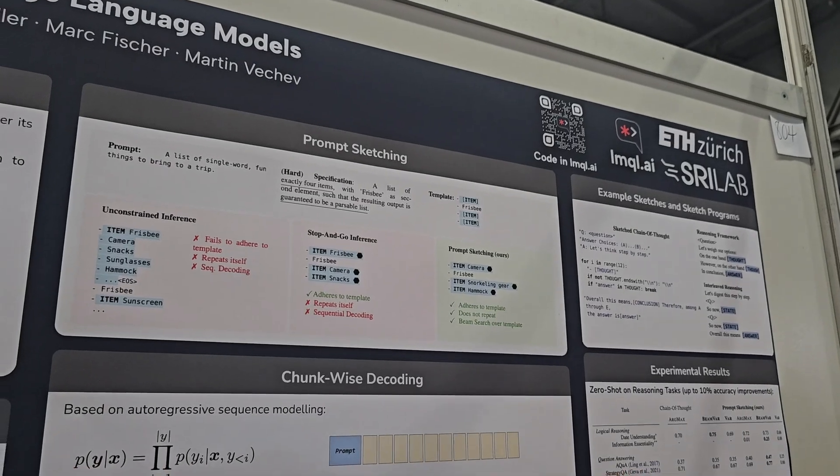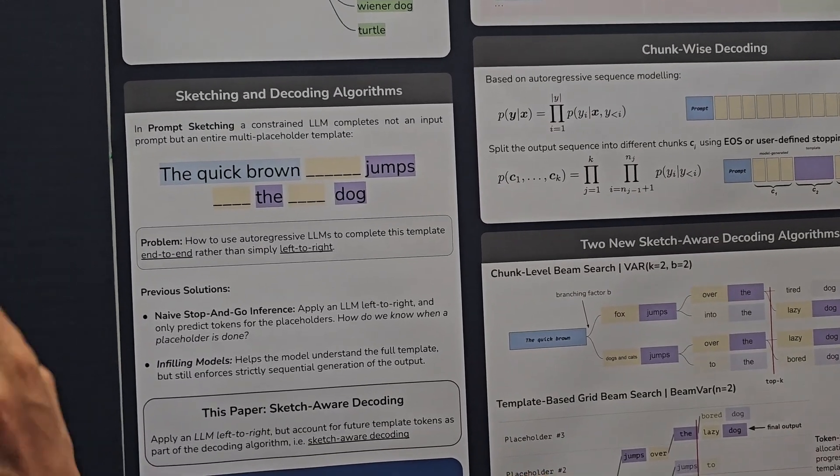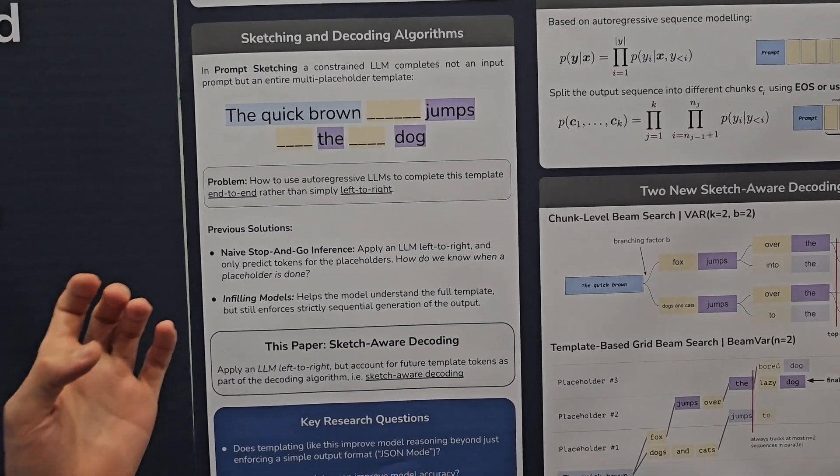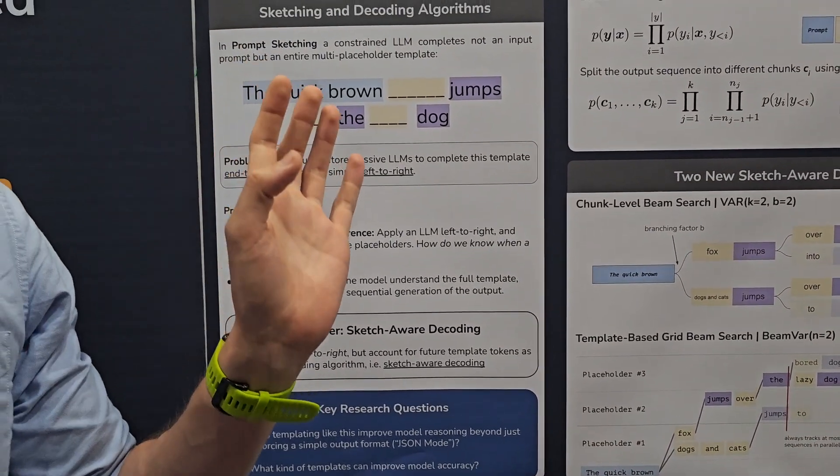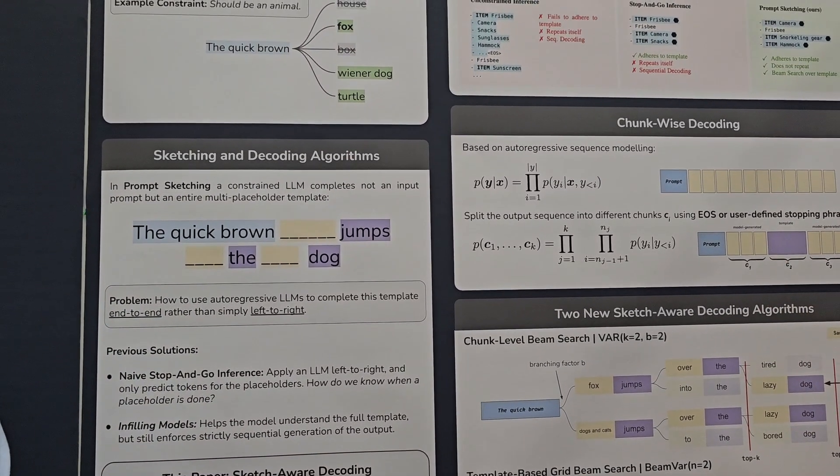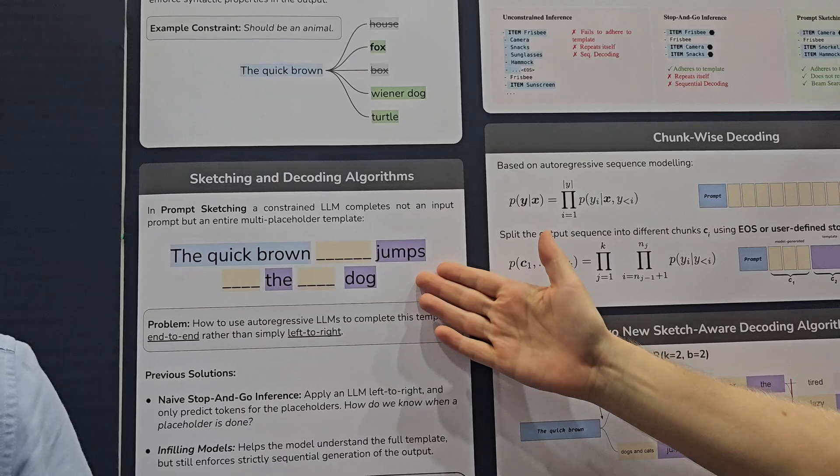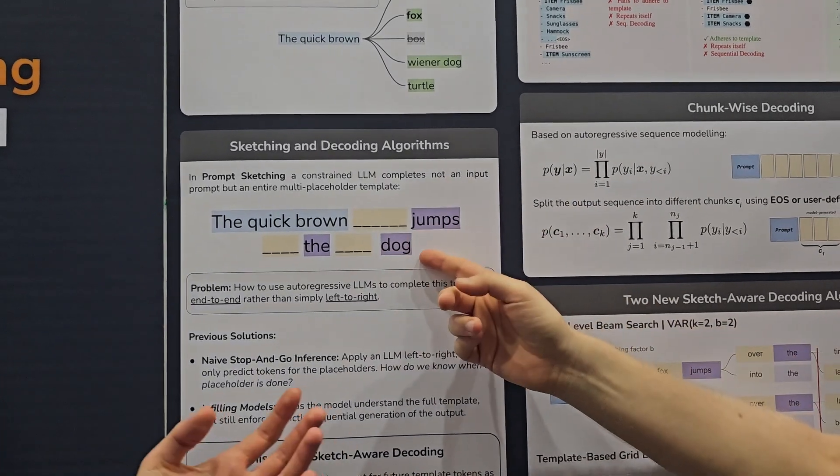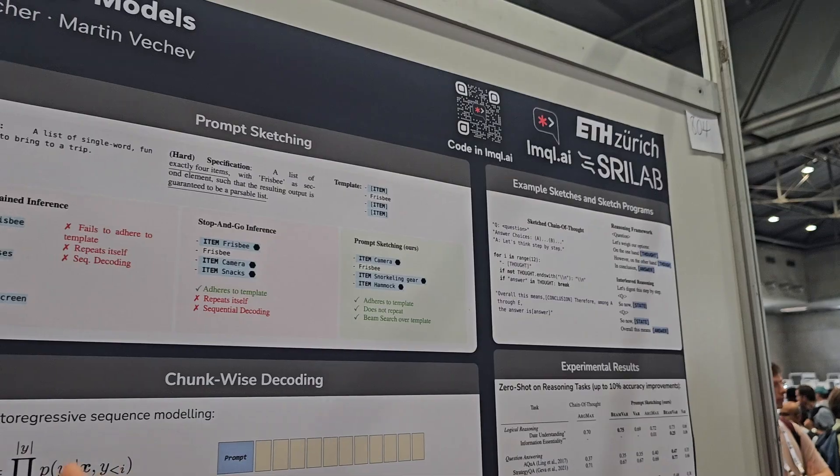We built this on LMQL, which is a language for constraint decoding, which solves some of these problems of decoding individual virtual tokens. And then while this does not work anymore with the OpenAI API since they've now removed access to logits at least in an efficient way, if you have better access to your models and we evaluate this also on Llama 2, then you can just use the code that we provide and use the prompt sketches here that we also provide for some popular benchmarks.